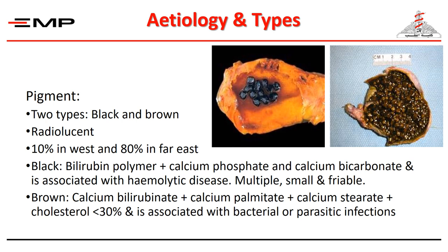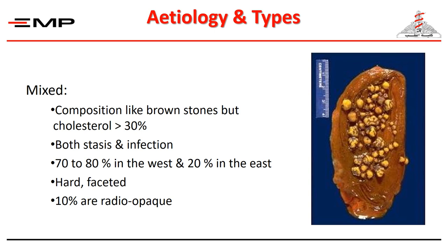Brown stones are different in that the cholesterol content is less than 30 percent. They are small, multiple, dark brown, rather of equal size, and shiny. Mixed stones comprise the majority of stones in Egypt but with few cholesterol. Mixed stones are yellow to brown and are characteristically hard and faceted. They are variable in size but the largest stones rarely exceed 2 centimeters. Radio-opaque stones belong to this type but still only 10 percent are radio-opaque.